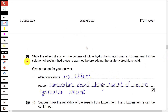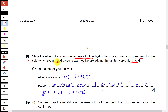Part F: state the effect, if any, on the volume of hydrochloric acid used in experiment 1 if the sodium hydroxide solution is warmed before adding the dilute HCl, and give a reason. The volume of HCl used depends on the moles or concentration of sodium hydroxide in the flask. Heating sodium hydroxide does not change its moles or amount, so there will be no change in the volume of acid used — no effect on volume. Temperature only affects the rate or speed of reaction, not the amount of sodium hydroxide present.